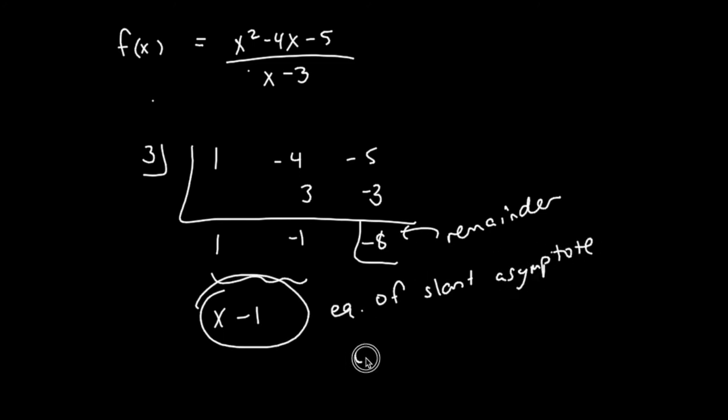My slant asymptote is y equals x minus 1. And if I were to graph this slant asymptote, I would use slope intercept form, right? The y-intercept is negative 1, the slope is 1.